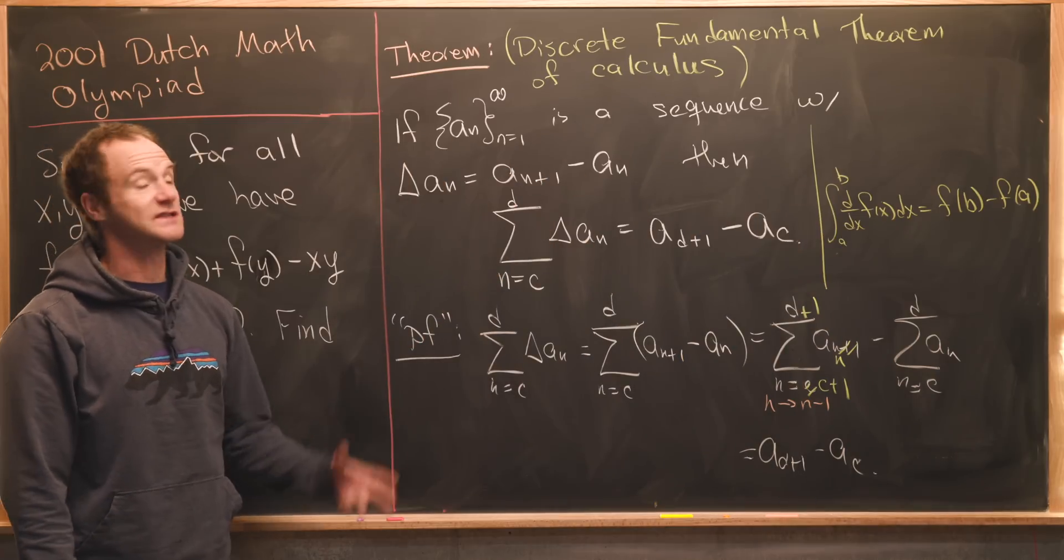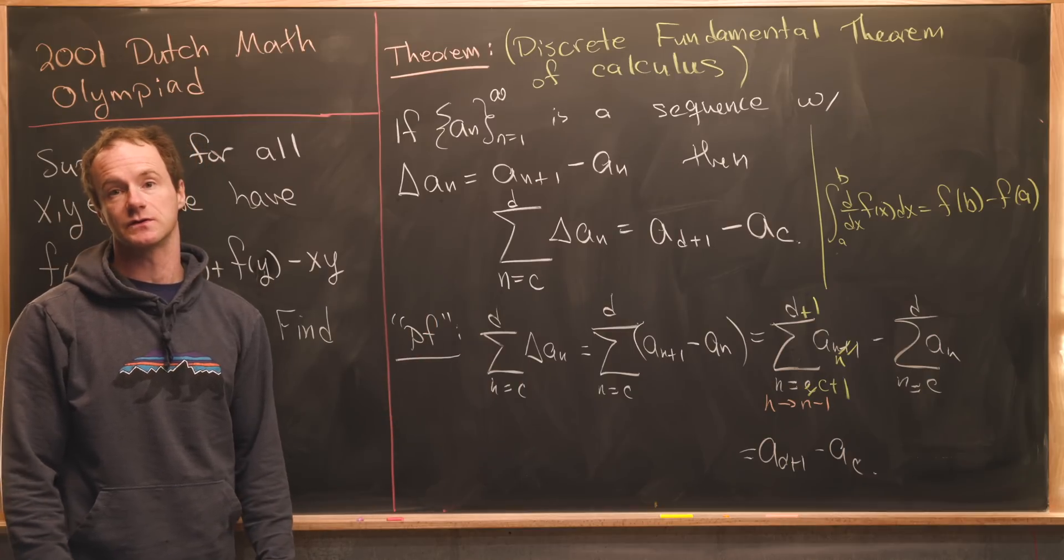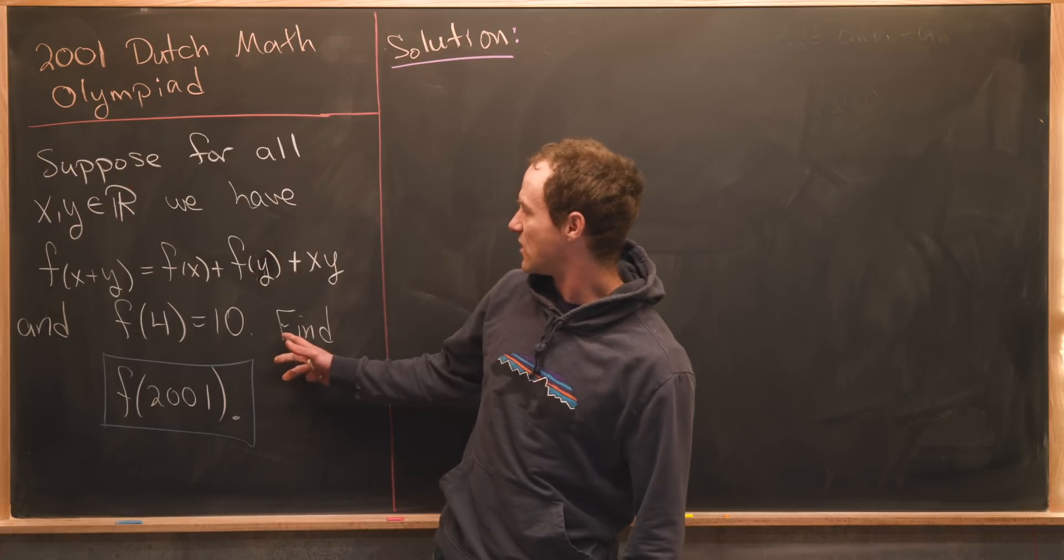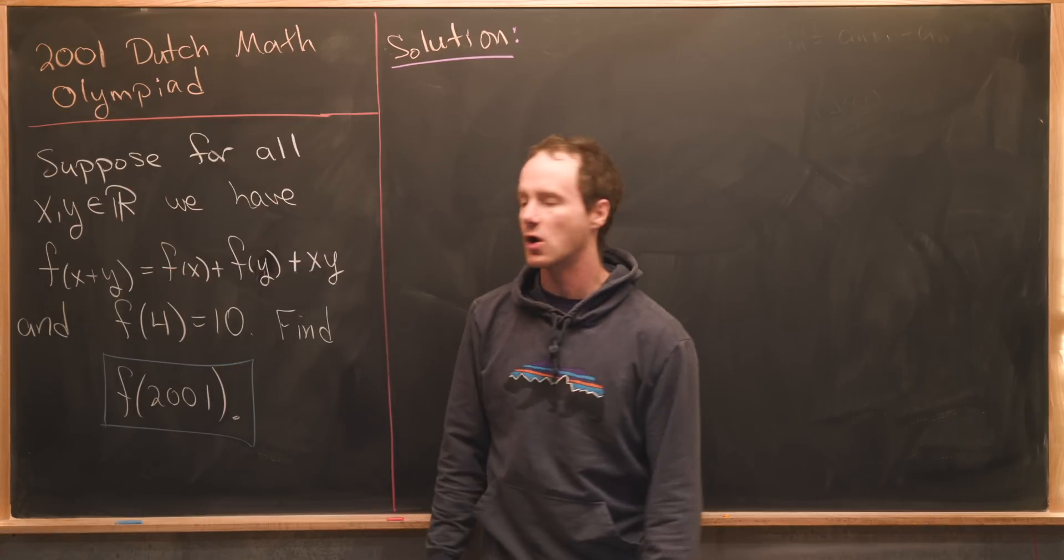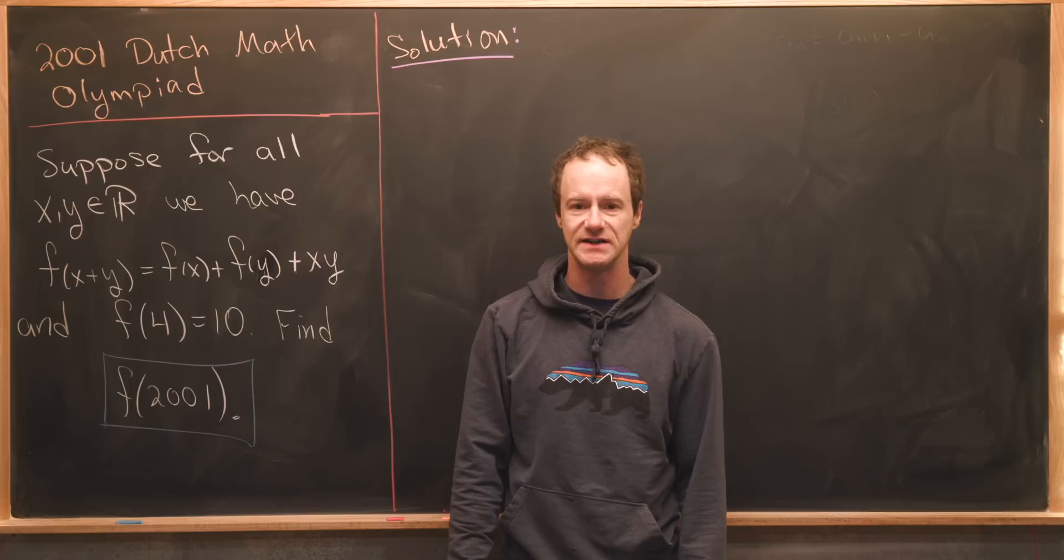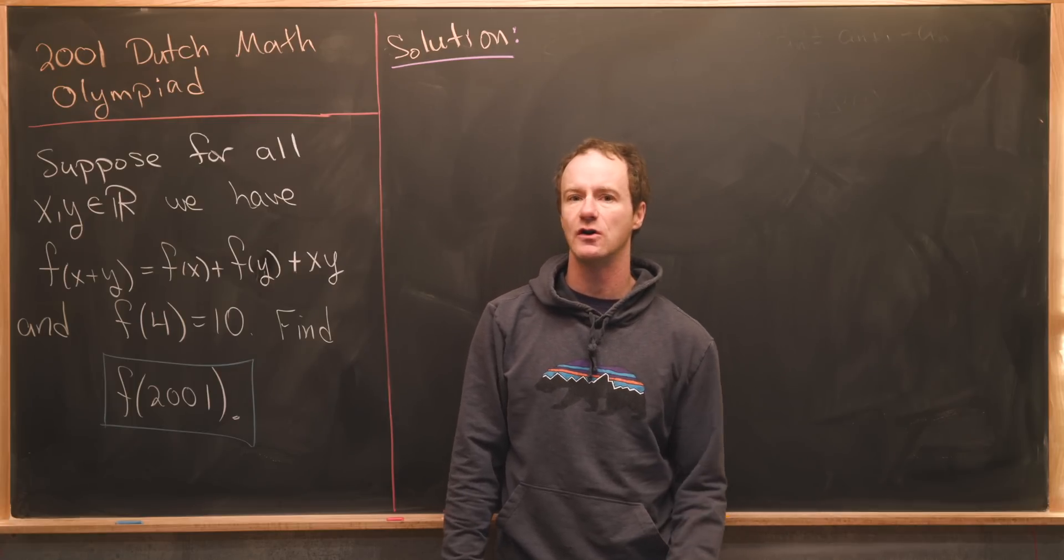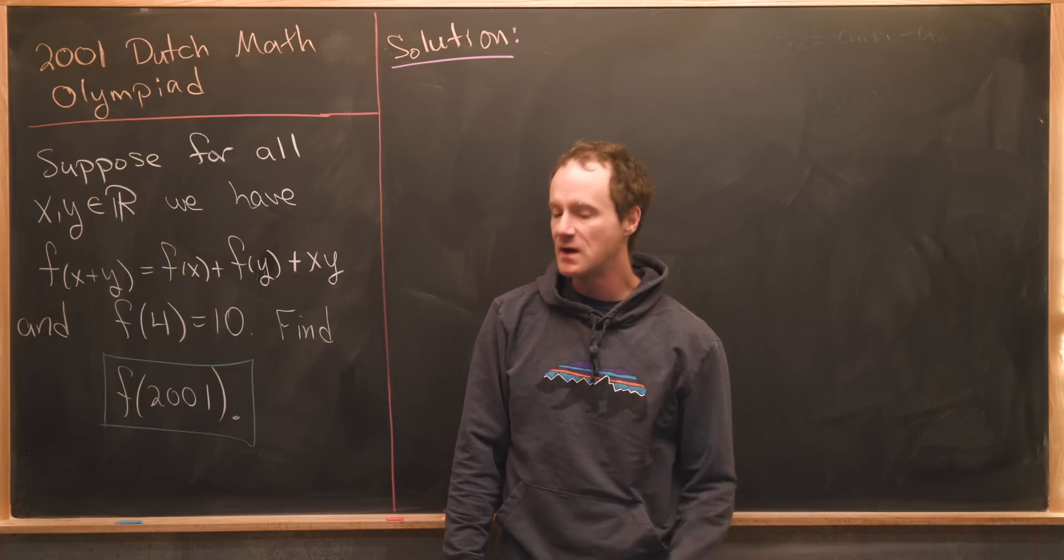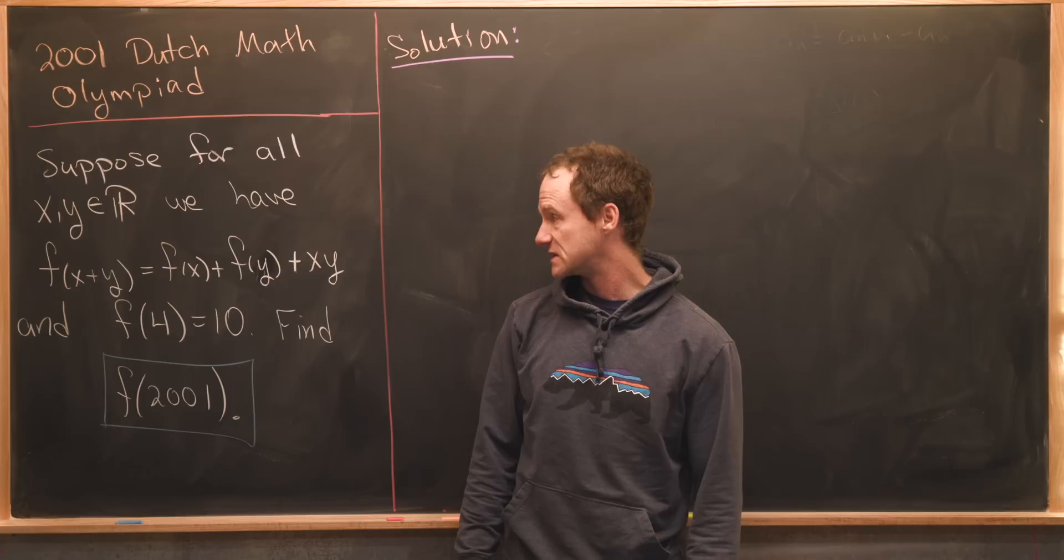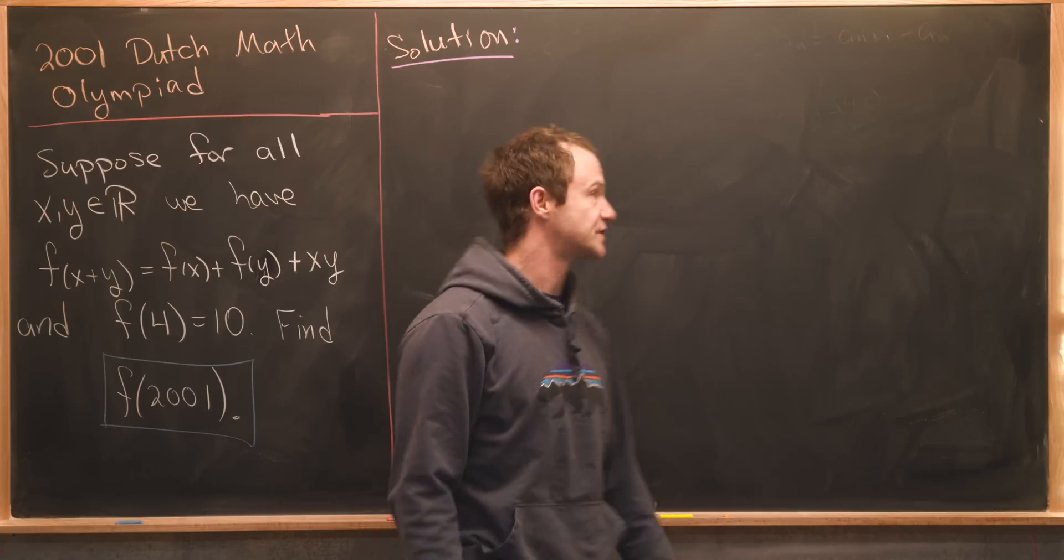Now that we've got this discrete fundamental theorem of calculus, let's clean up the board and look at the solution. Notice we've got a function which is defined over all real numbers but everything we talked about with the discrete derivative had to do with a sequence which is like a function defined over a discrete set. But what we can do is just focus on certain values of this function and then take a sequence defined by those certain values.